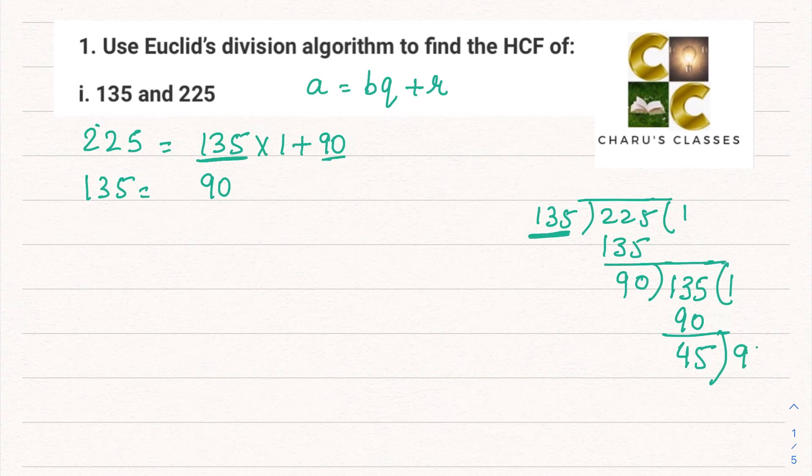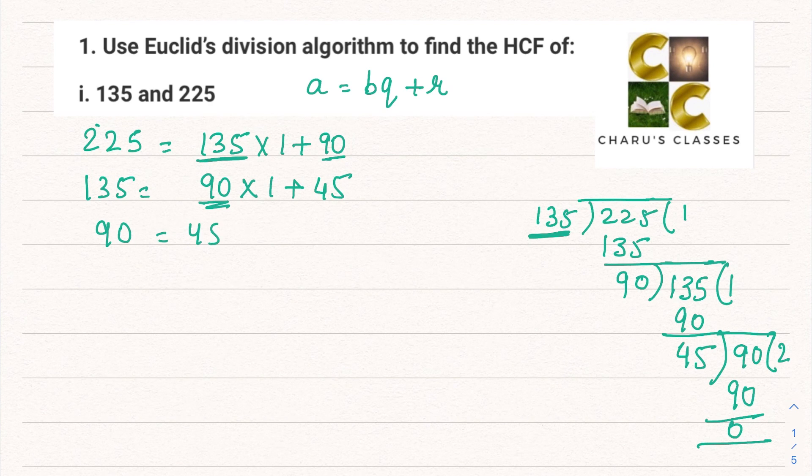Now this 45 will be divided by 90, and we know 45 times 2 is 90. Now we have reached the remainder 0. 135 is going to be 90 into 1 plus 45, and 90 can be written as 45 into 2 plus 0.